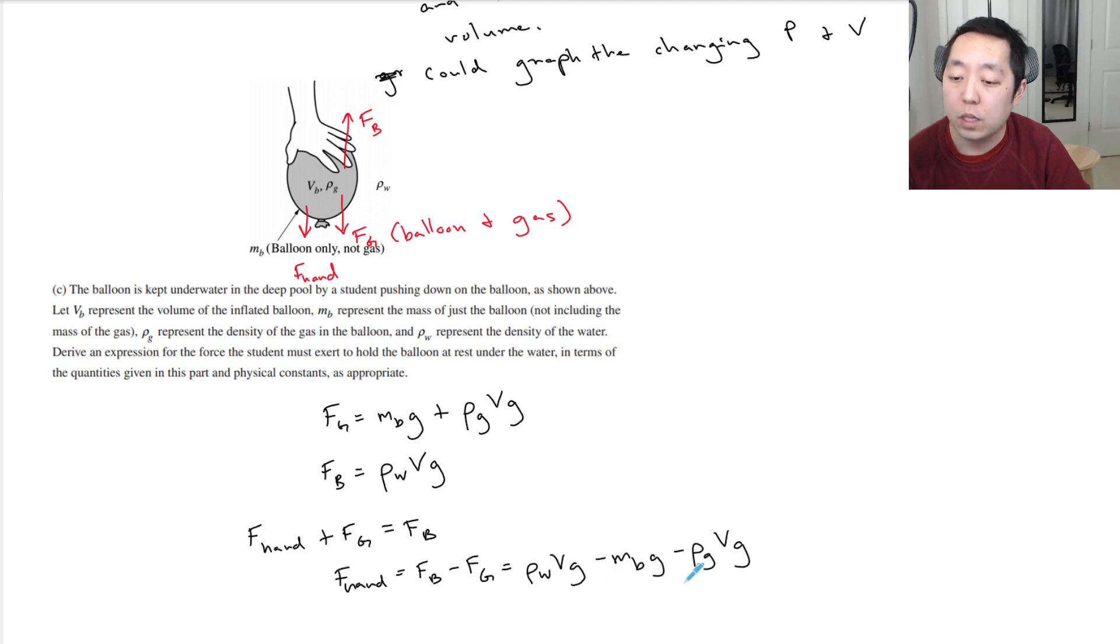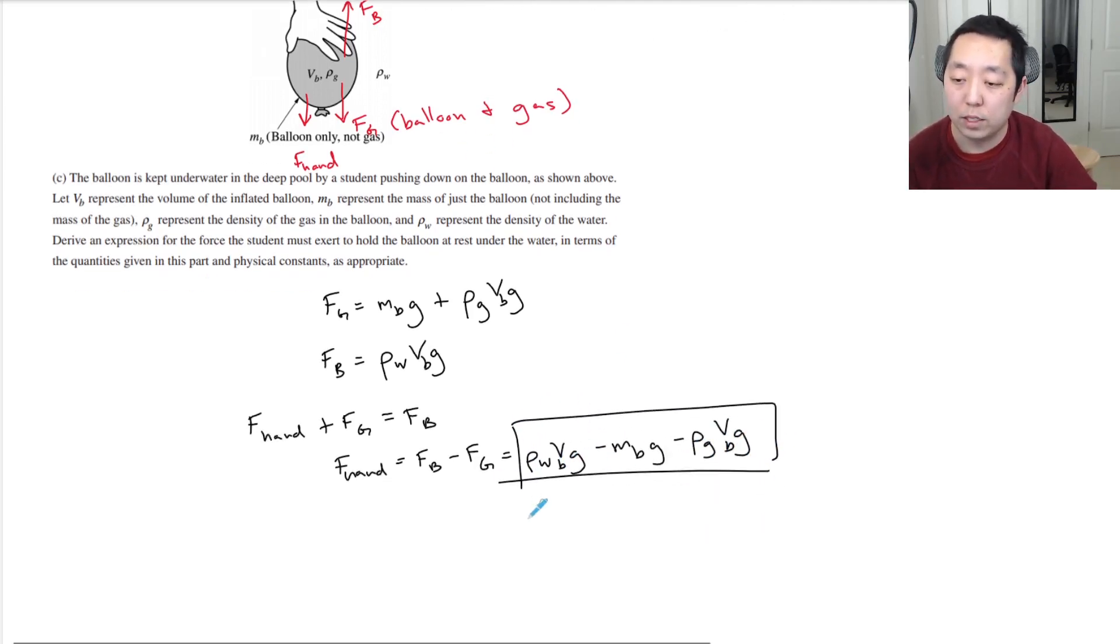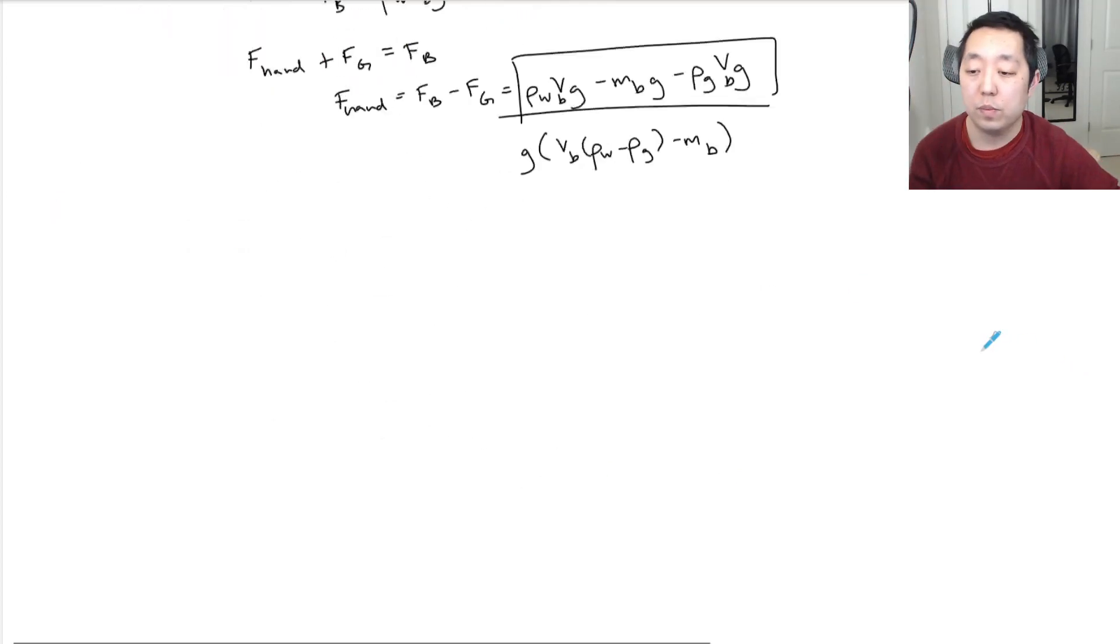It requires me to know the volume. So VB is what they want to call the volume, and I would leave it like that, honestly. You could combine these if you want. You could factor out a G and make it VB times rho W minus rho G minus MB. But honestly, it doesn't really matter that much if you factor that or not.